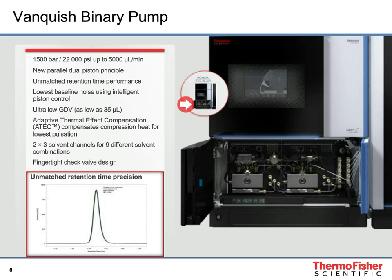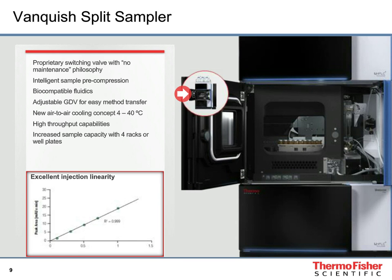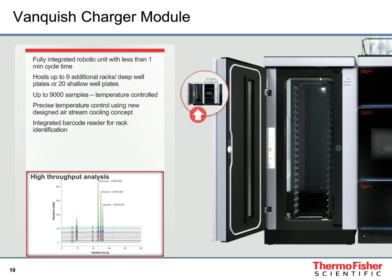We can achieve an absolute standard deviation of just 14 milliseconds in retention time. The Vanquish split sampler autosampler is based on biocompatible fluidics. We developed a proprietary injection valve because no existing valve on the market could handle 22,000 psi. This gave us the freedom to establish a no-maintenance philosophy — the valve is designed to last as long as the system with no replacement parts. Intelligent sample pre-compression further improves retention time precision, enabling impressive dosage precision in the sub-1 microliter range.